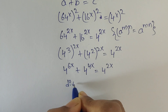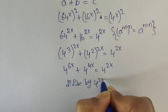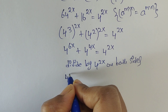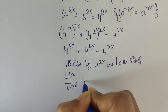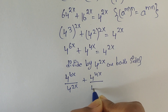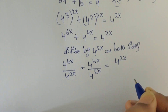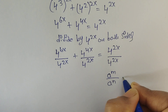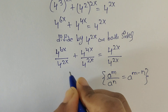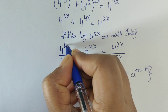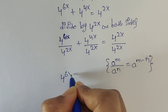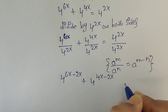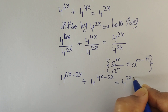So here divide both sides by 4 to the power of 2x. So now it will be: 4 to the power of 6x divided by 4 to the power of 2x, plus 4 to the power of 4x divided by 4 to the power of 2x, equals 4 to the power of 2x divided by 4 to the power of 2x. We can apply the formula a to the power of m divided by a to the power of n equals a to the power of m minus n. So we get: 4 to the power of 6x minus 2x, plus 4 to the power of 4x minus 2x, equals 4 to the power of 2x minus 2x.